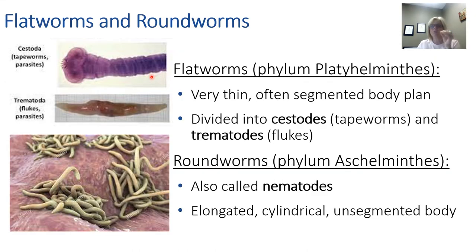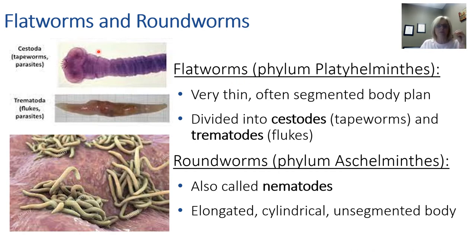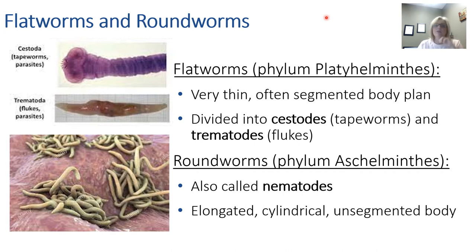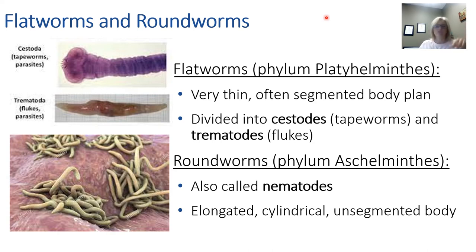We're going to look at two major groups based on body type: flatworms (platyhelminthes) and roundworms (nematodes). Flatworms have thin segmented bodies and are divided into cestodes — like tapeworms — and trematodes — which are flukes. Trematodes have flat, ovoid-type bodies. Roundworms have a more oblong, elongated, cylindrical shape and do not have segments.